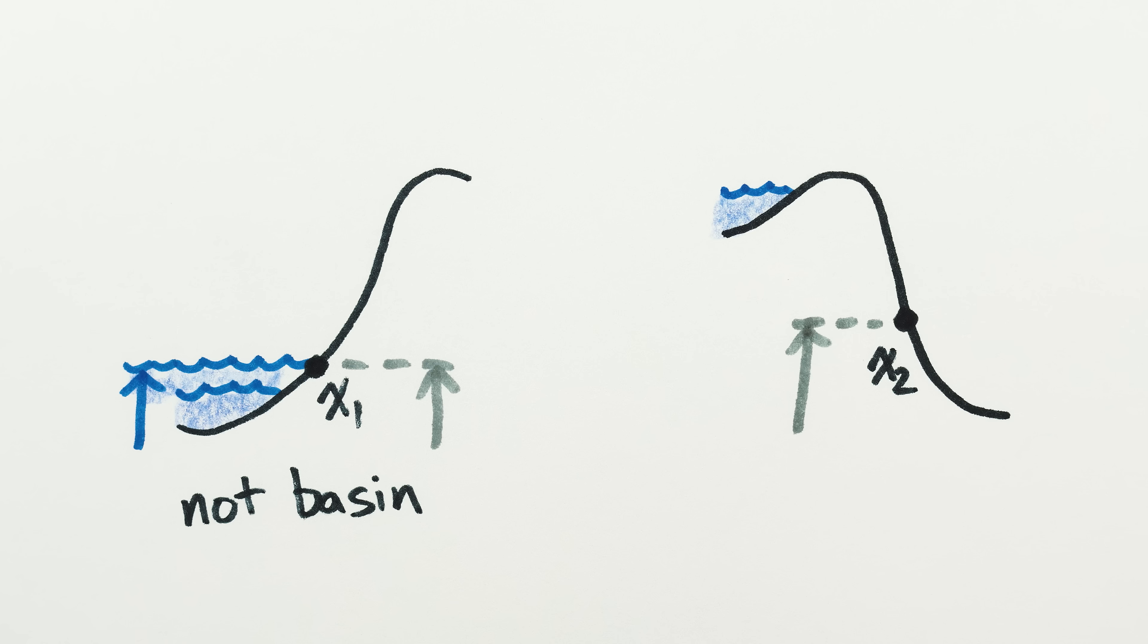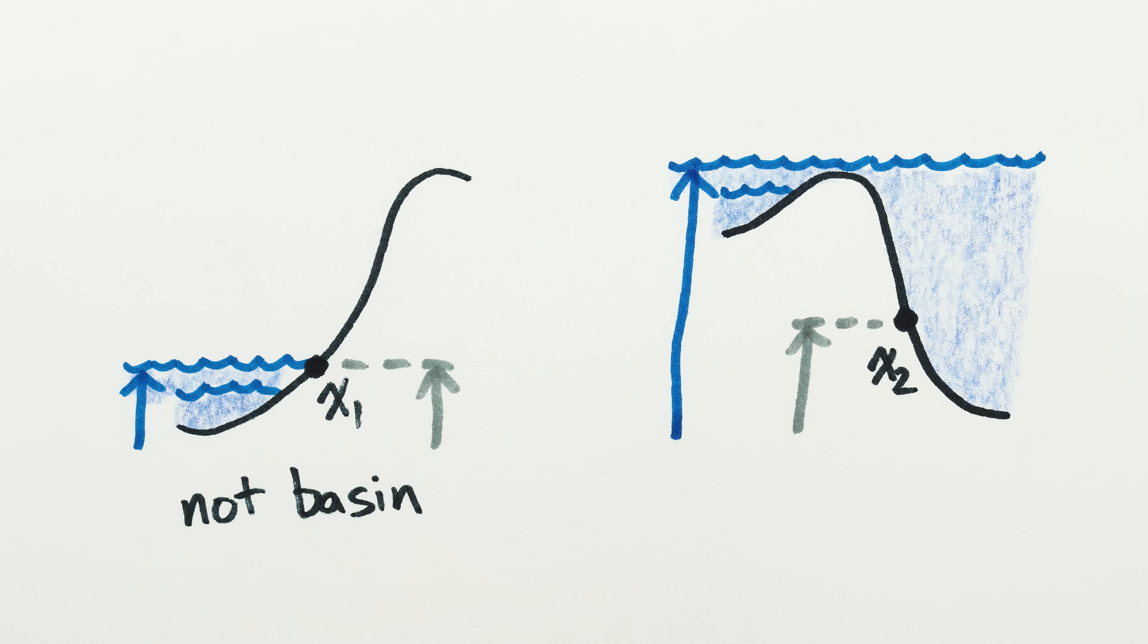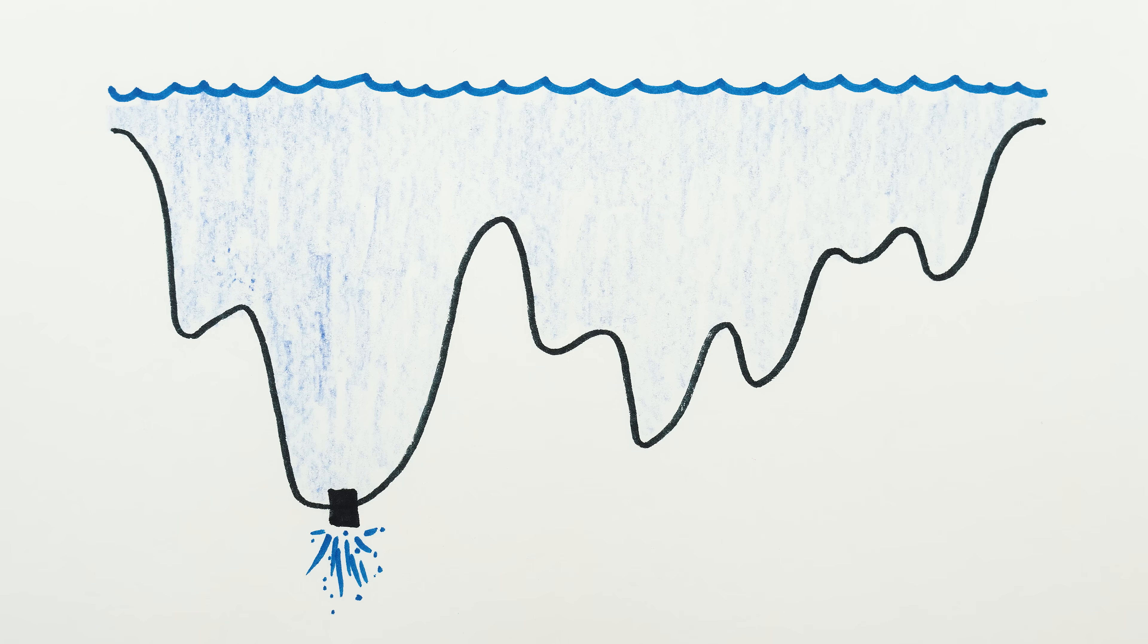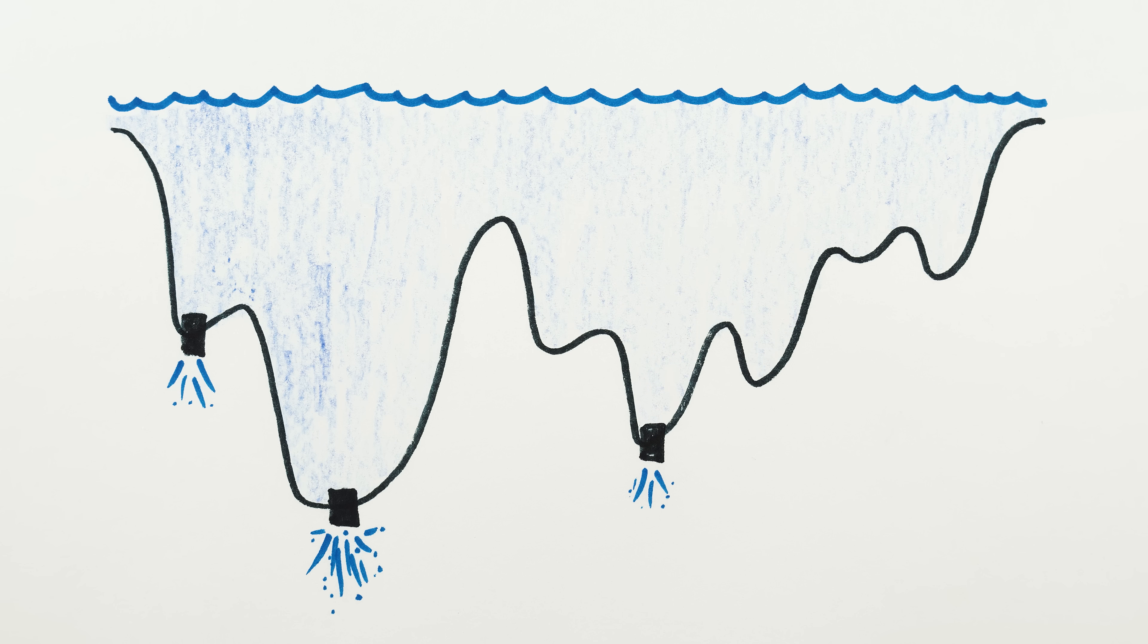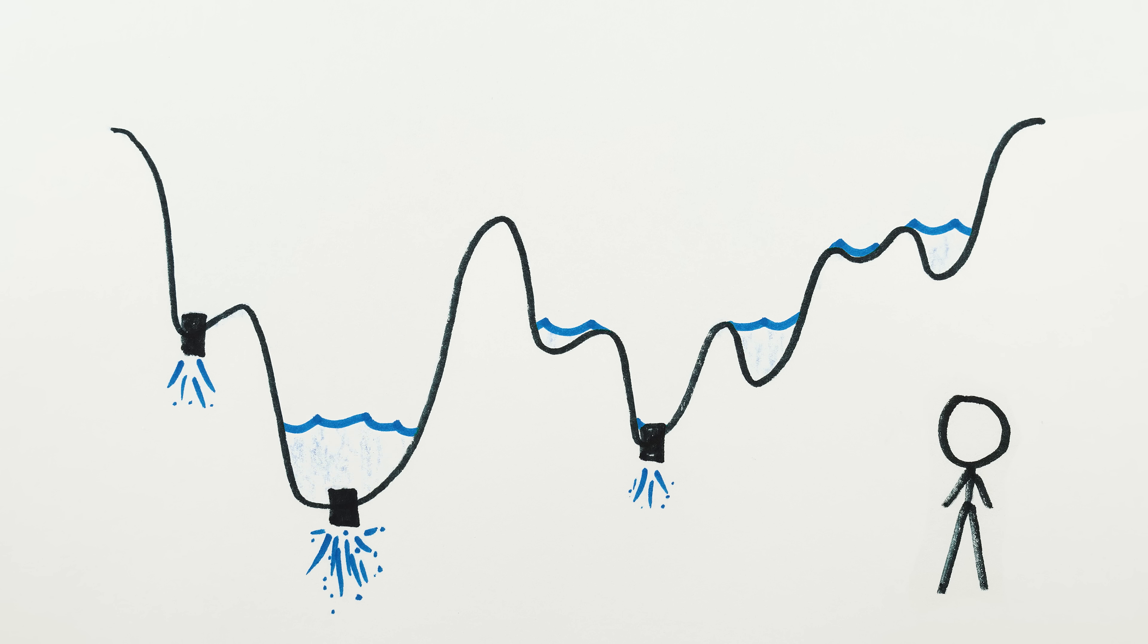But if a point first becomes covered with water only after the water is already higher than that point, then that point is in a landlocked sea. And now you know where to put the secondary drains so that when you pull the plugs, the ocean will finally be fully… wait, there are new landlocked seas that appeared inside the previously landlocked seas when we drained them? I give up.